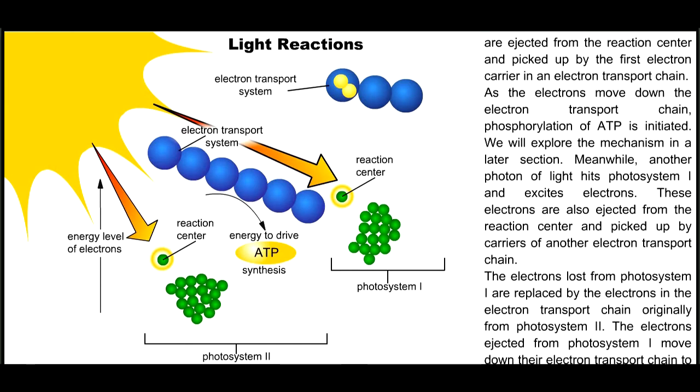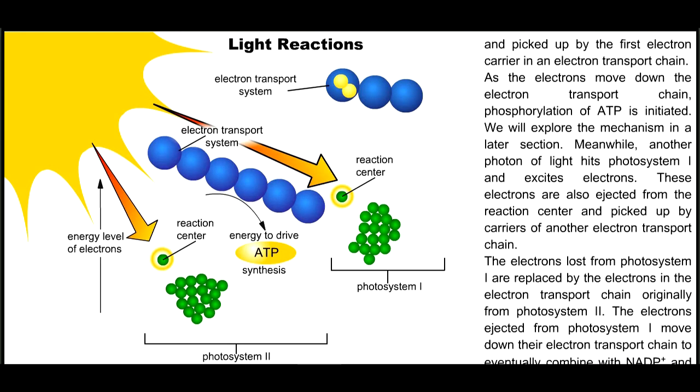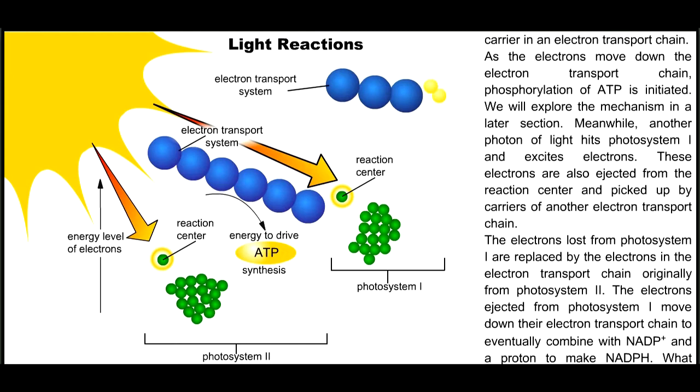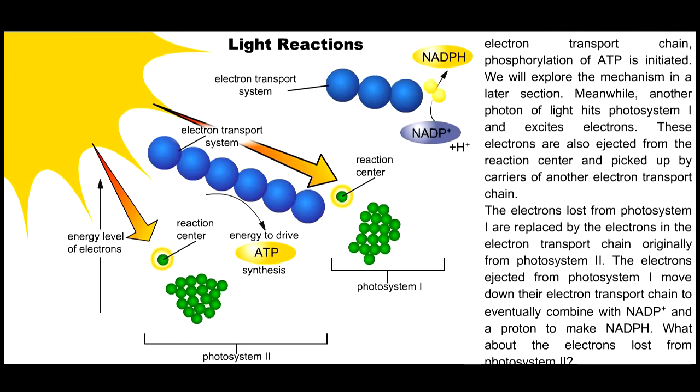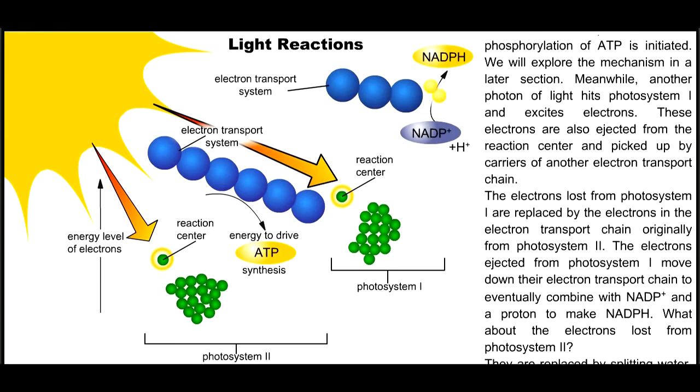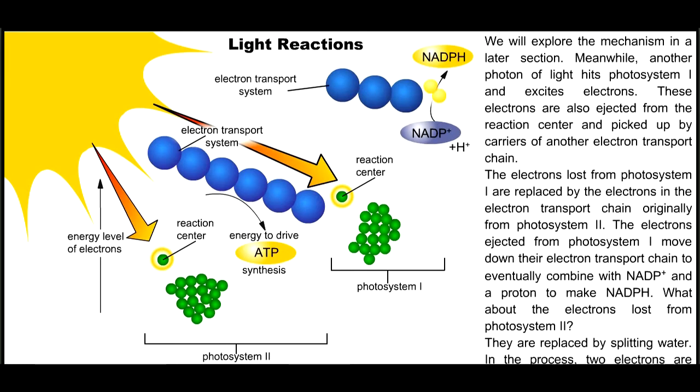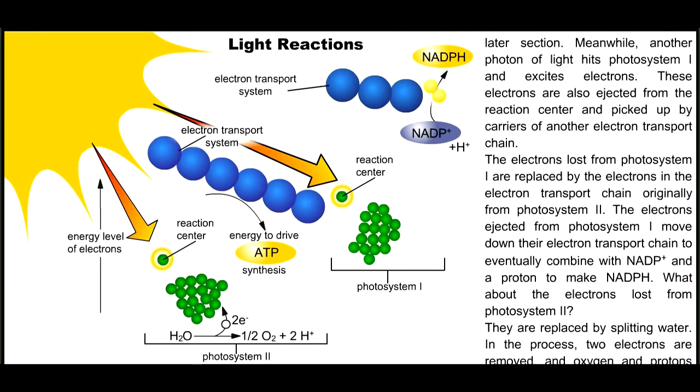The electrons ejected from photosystem I move down their electron transport chain to eventually combine with NADP+ and a proton to make NADPH. What about the electrons lost from photosystem II? They are replaced by splitting water.